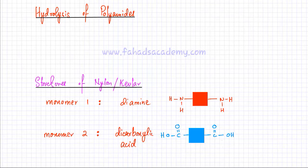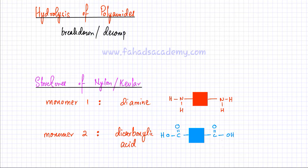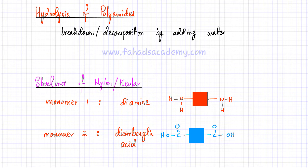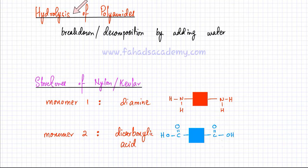In this video lecture we're going to talk about the hydrolysis of polyamides. Hydrolysis means the breakdown or decomposition by the addition of water. Polyamides were formed from monomers — for example, nylon and kevlar. A polyamide consists of a diamine and a dicarboxylic acid monomer. Hydrolysis is the exact reverse: you have a polyamide and you break it back into its monomers.